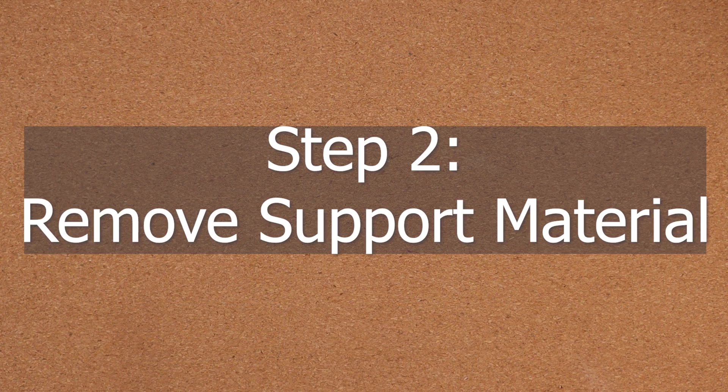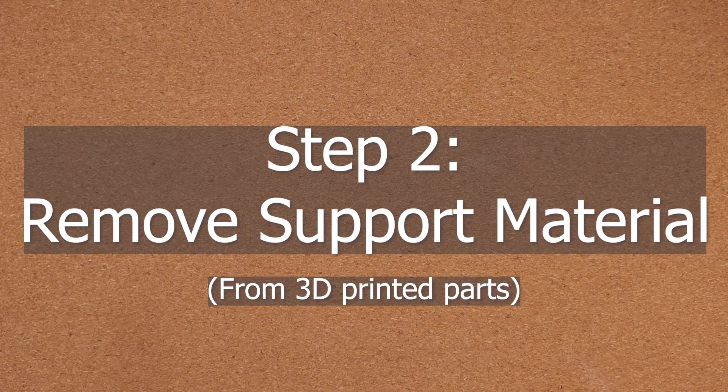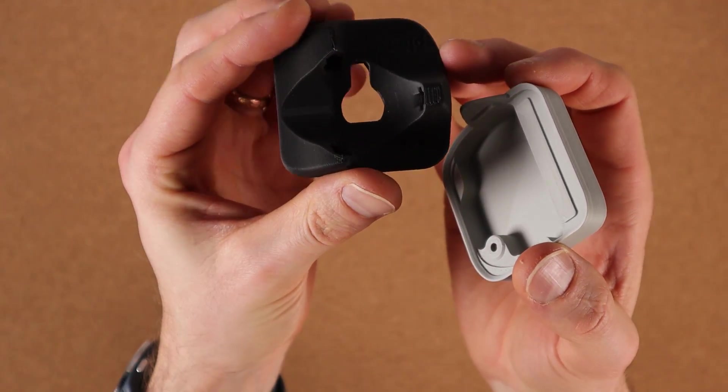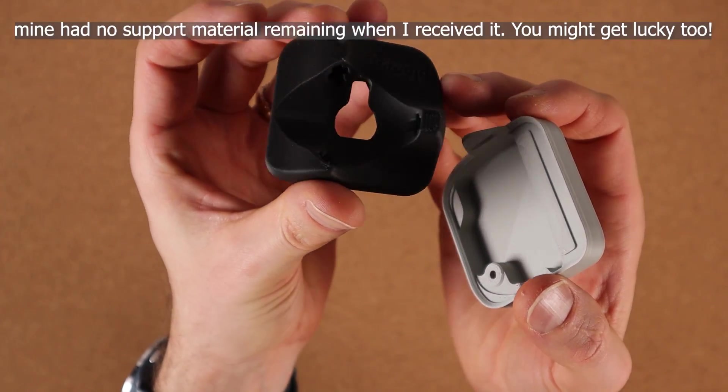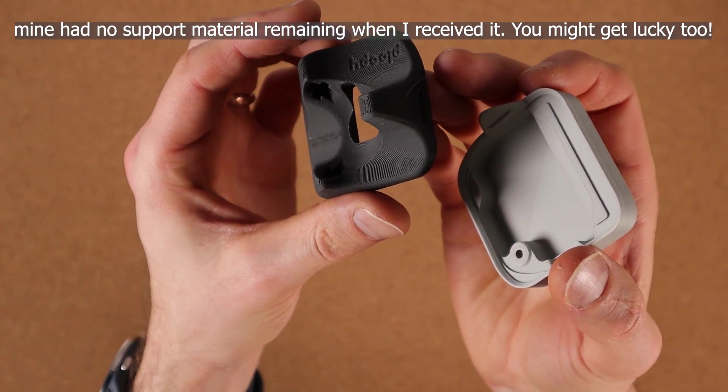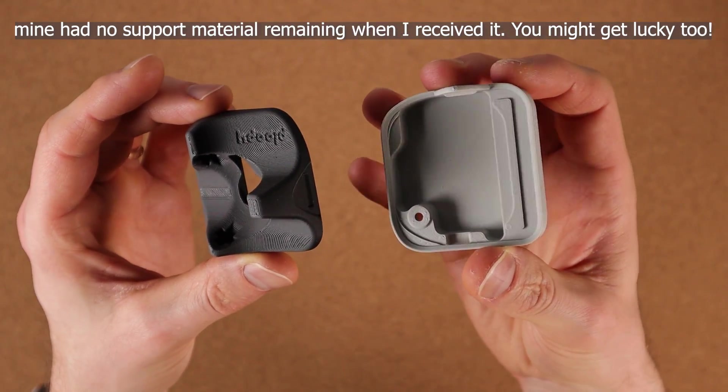Step two is to remove support material from 3D printed parts. So have a look at the parts you've received, see if there's any little threads or little bits that don't look like they belong there, and just clean those up a little bit.